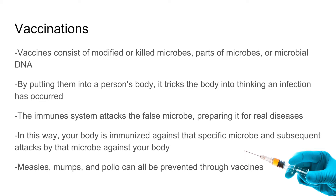On to vaccinations. Vaccines mostly consist of modified or killed microbes, parts of microbes, or microbial DNA. Putting them into a person's body basically tricks the body into thinking an infection has occurred, and the immune system attacks the false microbe, which prepares it for the real disease. In this way, your body is immunized against that specific microbe and subsequent attacks. Measles, mumps, and polio can all be prevented through vaccines, and researchers are constantly trying to figure out ways to prevent other diseases through vaccines.